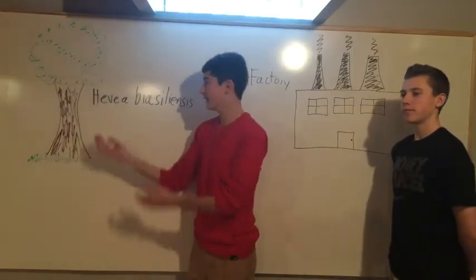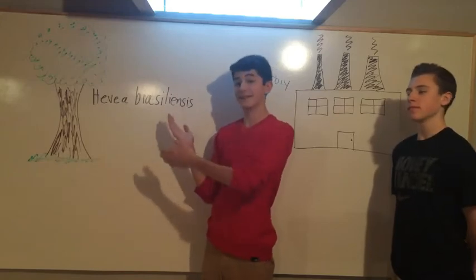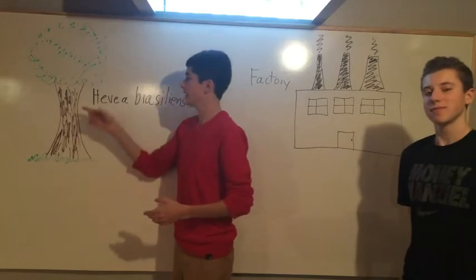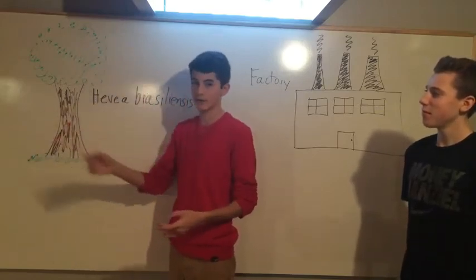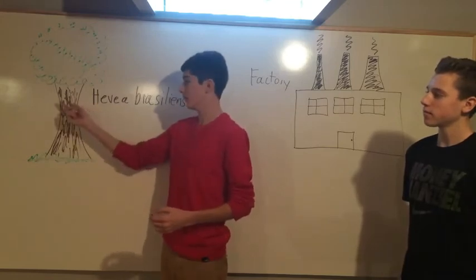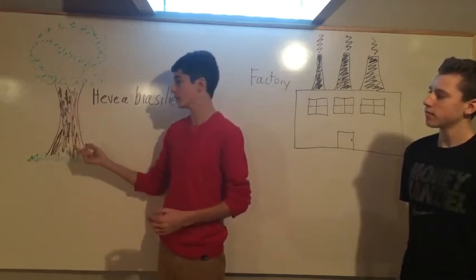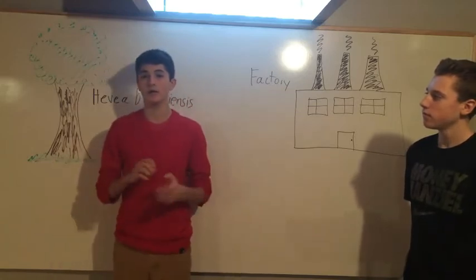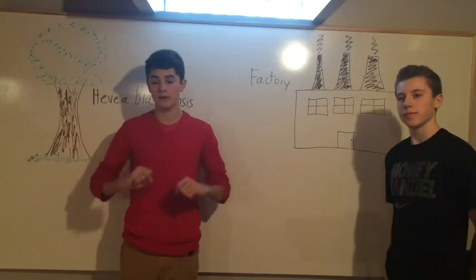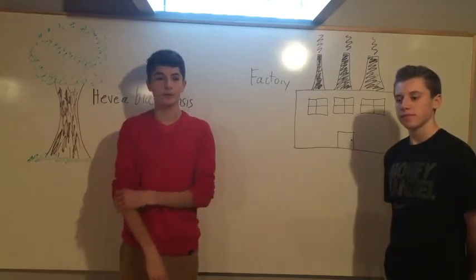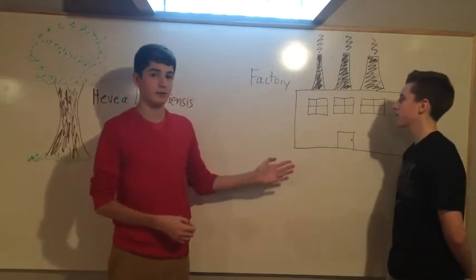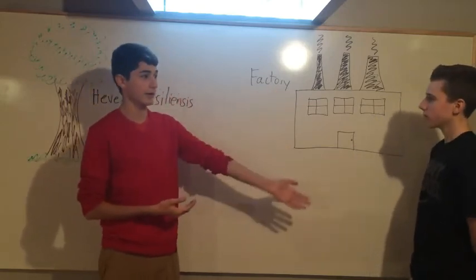Rubber starts off in the Hevea brasiliensis tree, which does not look like this at all, because I'm obviously not a good artist. It's a taller tree with less branches, and what they do is they scrape off part of the bark, and the white liquid latex will flow from the tree. That is what they use to create normal sheets of rubber through a long process of heating down and applying other chemicals to it, which will then be sent to separate factories designed to create certain things.